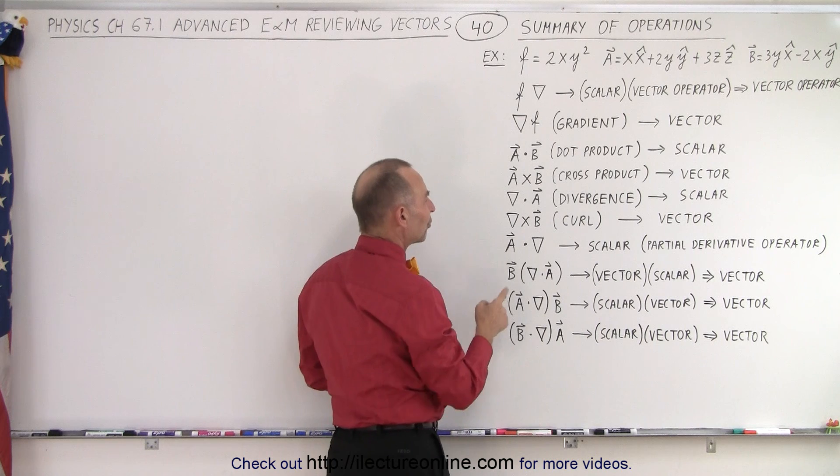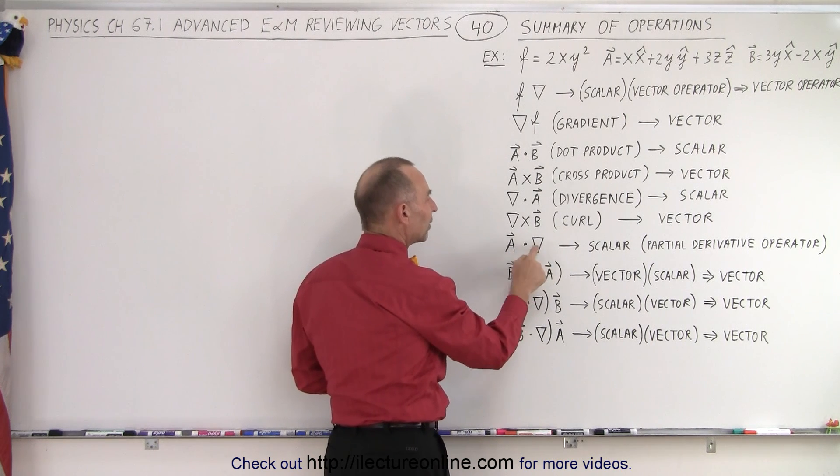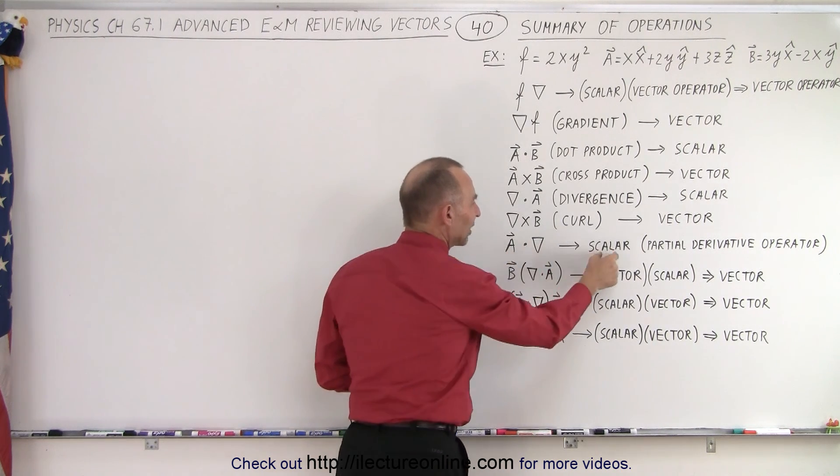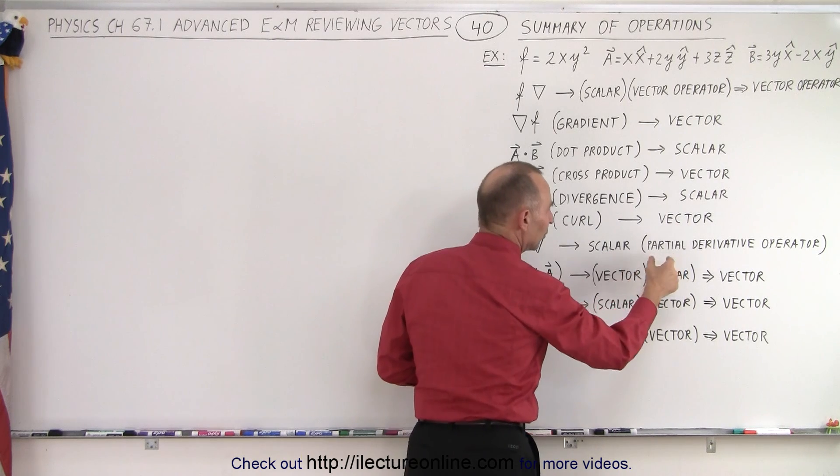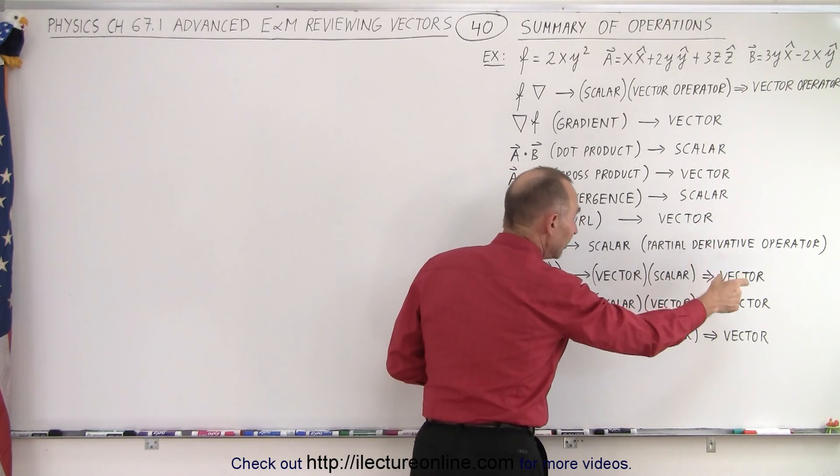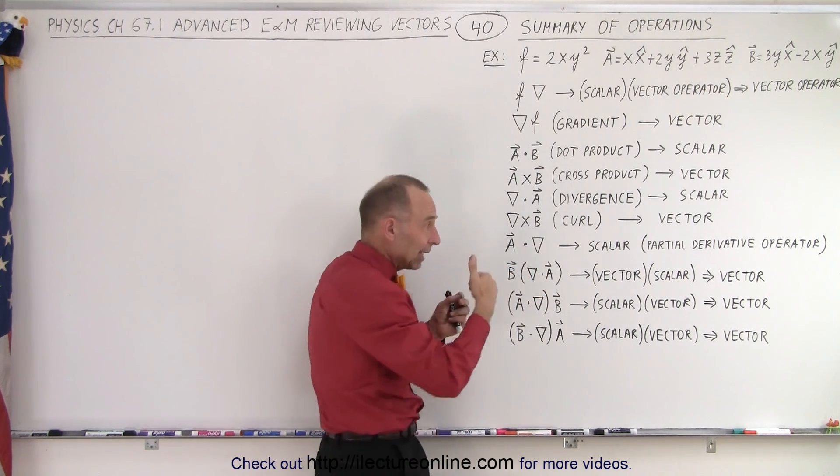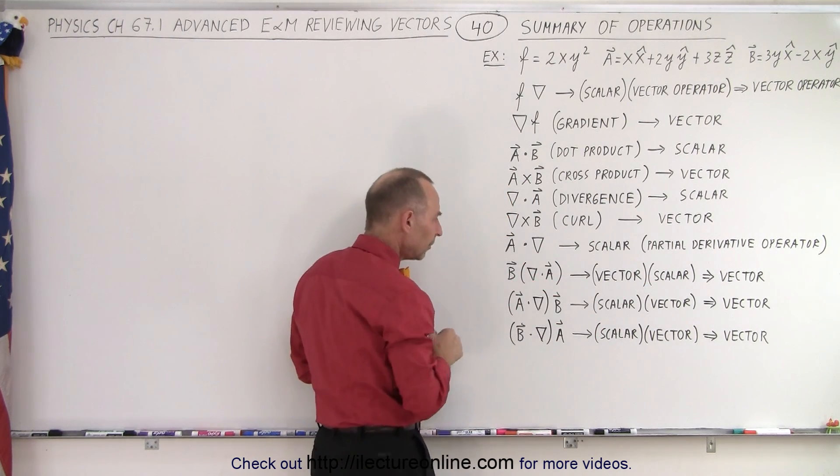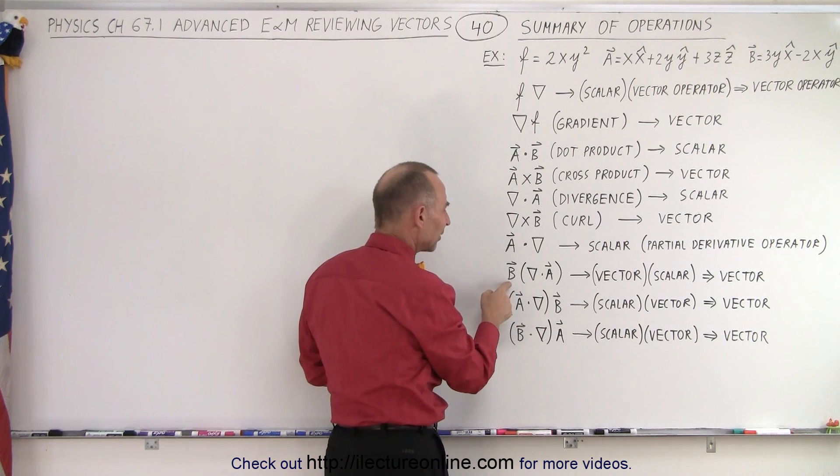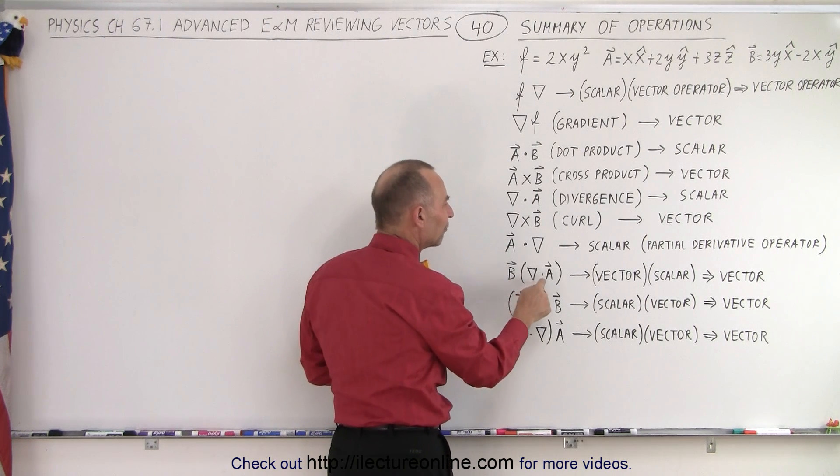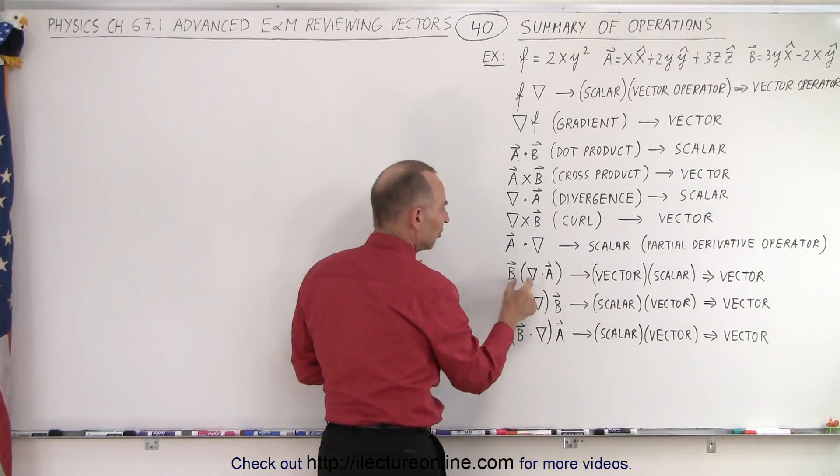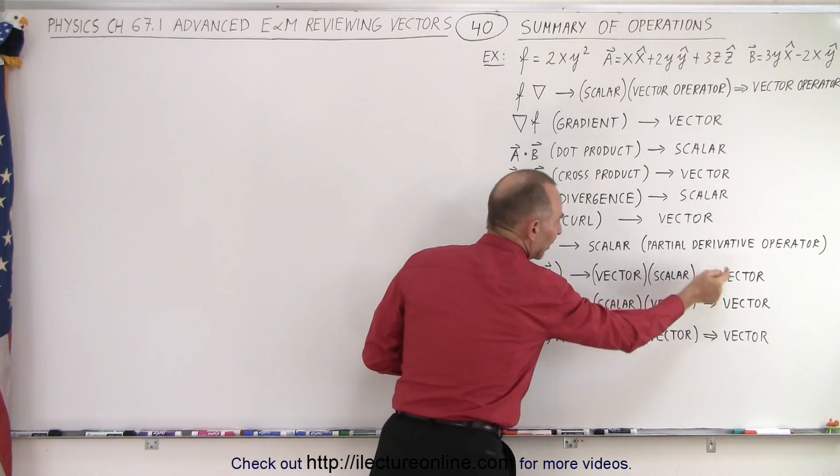And then we have the product between a vector and the del operator via the dot product, so we have a scalar multiplied times a partial derivative operator, and so that's what we end up with. We still end up with an operator that can then operate on something else. Or we have the b vector multiplied times the divergence of a. Now the divergence gives you a scalar, and here's a vector when you multiply, you end up with a vector quantity.